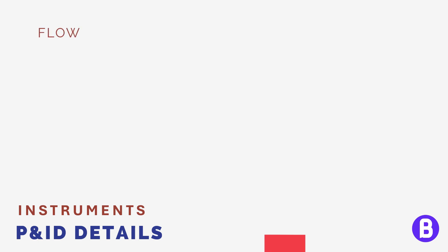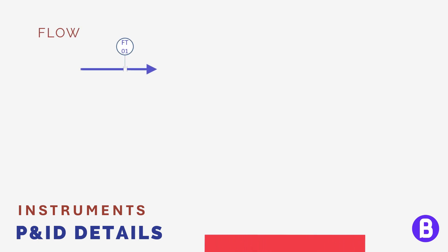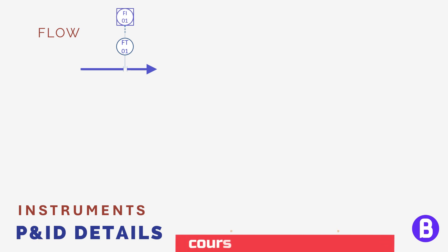Through a flow element, we can read flow in a pipe. This reading may not just be in the field, but we can also send this reading to the control room to be read by the operator, as we highlighted in the previous video.